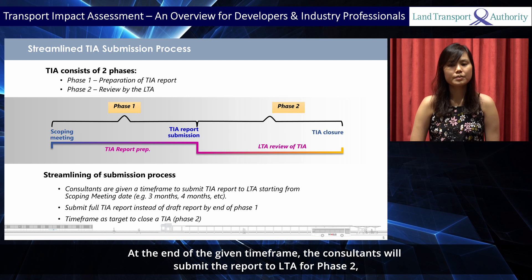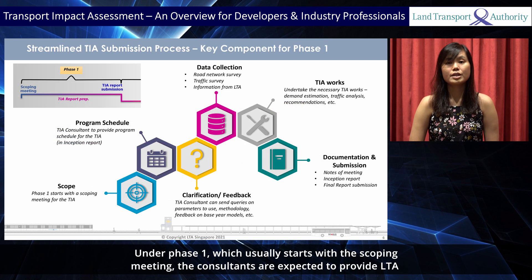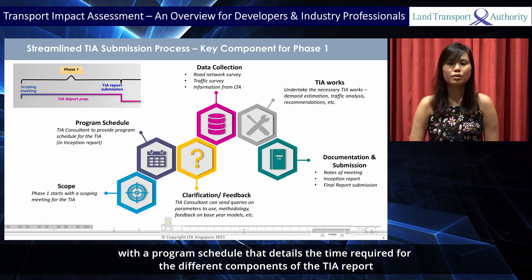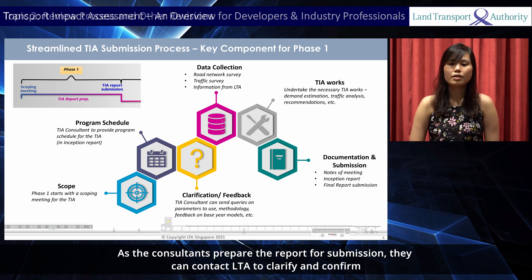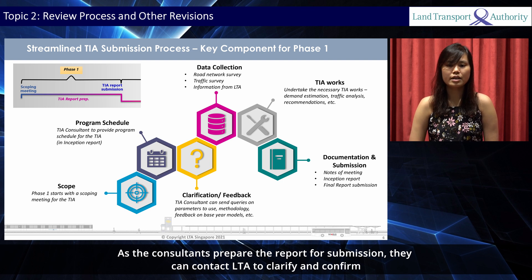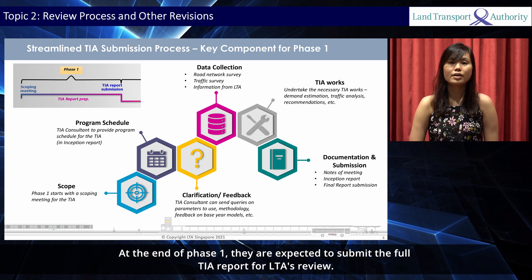At the end of the given time frame, the consultants will submit the report to LTA for Phase 2, which is a review of the submission by LTA. Under Phase 1, which usually starts with the scoping meeting, consultants are expected to provide LTA with a program schedule detailing the time required for different components of the TIA report, such as data collection, model preparation, analysis, and so on. As they prepare the report, they can contact LTA to clarify key parameters and assumptions and seek feedback on their models. At the end of Phase 1, they are expected to submit the full TIA report for LTA's review.